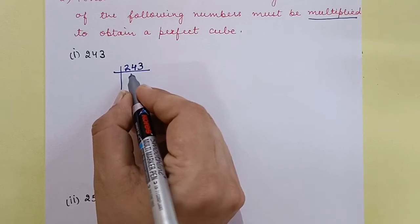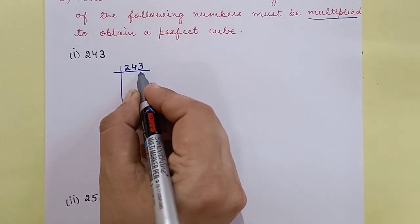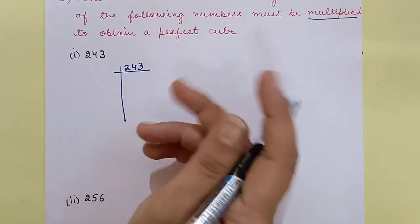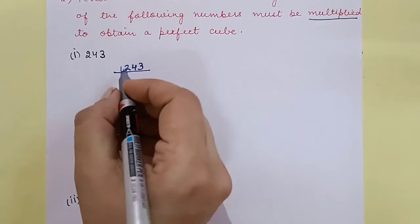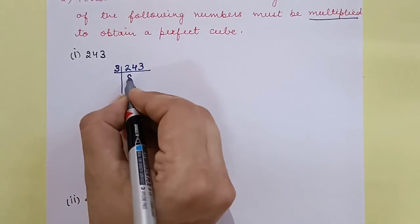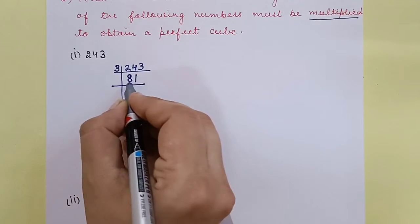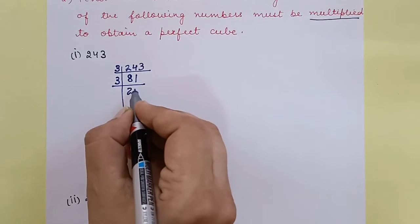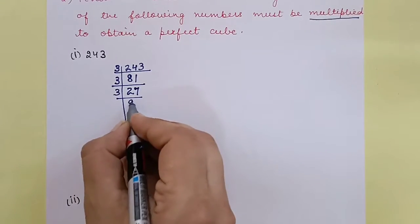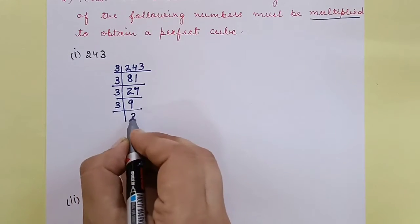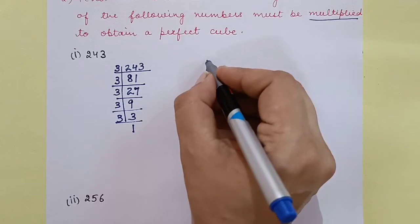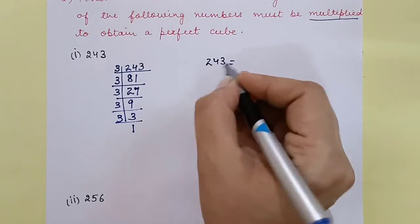Now see which number will divide 243. Looking at the last unit place, it's 3, so it won't be divisible by 2. Now let's check the sum of digits: 4 plus 2 is 6, 6 plus 3 is 9. So it goes into the table of 3. Divide by 3 repeatedly — 243 divided by 3 gives 81, then 27, then 9, then 3, then 1. Now let's write the factors of 243.